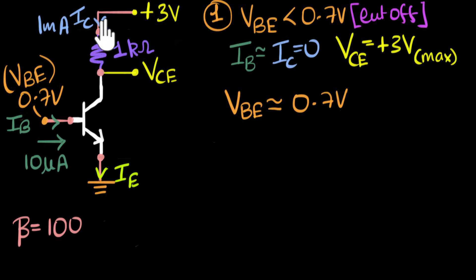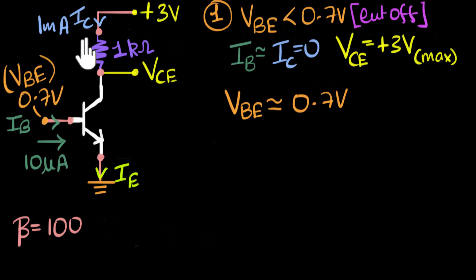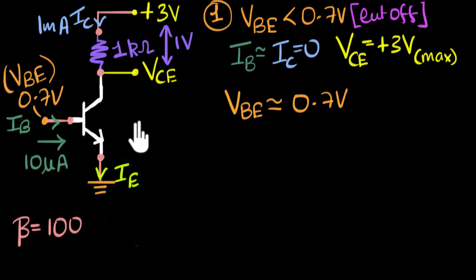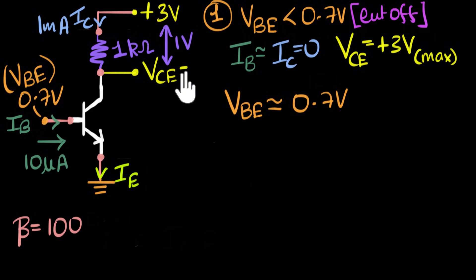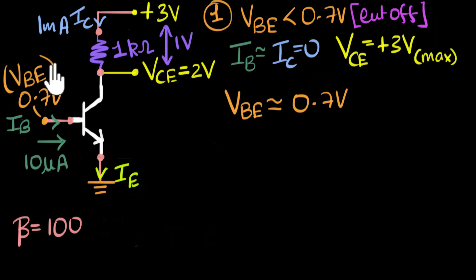Now think about this: because the current is one milliampere, there's going to be some voltage drop across the resistor. Now let's increase this voltage a little bit more so that the current changes to 20 microamperes. The output current will be 100 times more, so output current will be two milliamperes. Since this is now two milliamperes, the potential drop across the resistor would be two volts. So out of three volts, you lose two volts, and as a result the output voltage becomes one volt. It's still acting like an amplifier. The output voltage decreased while the output current increased — this is now working as an amplifier.